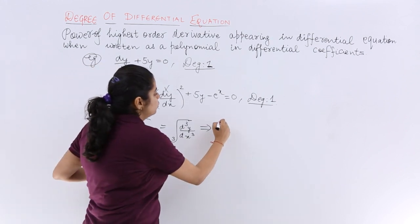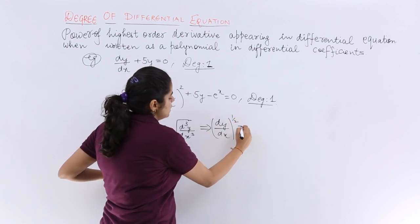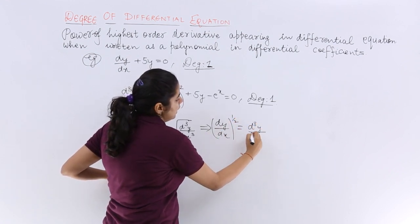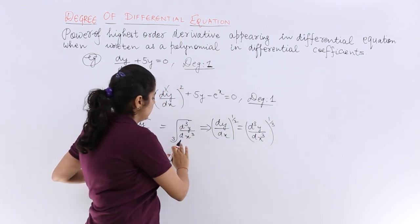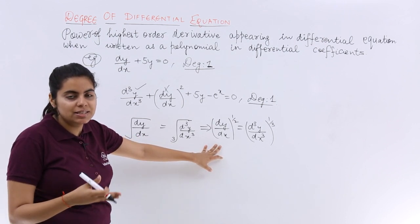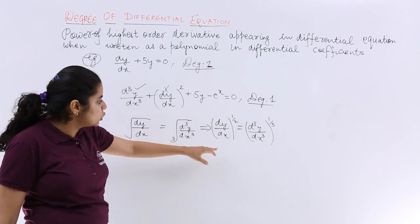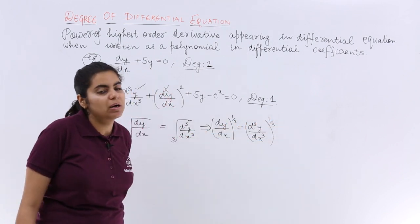This is power 1/2. So it is (dy/dx)^(1/2) = (d³y/dx³)^(1/3). This is the case. Now first let's remove the things that are coming into way. So I know that (dy/dx)^(1/2) and (d³y/dx³)^(1/3). Let's cube both sides.